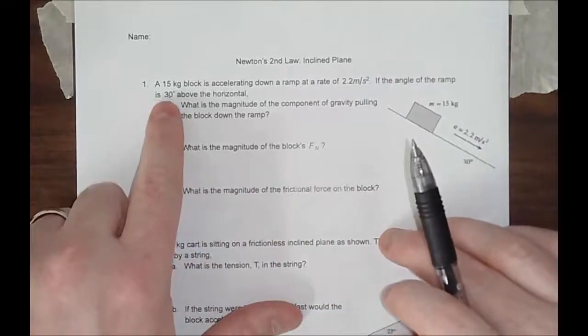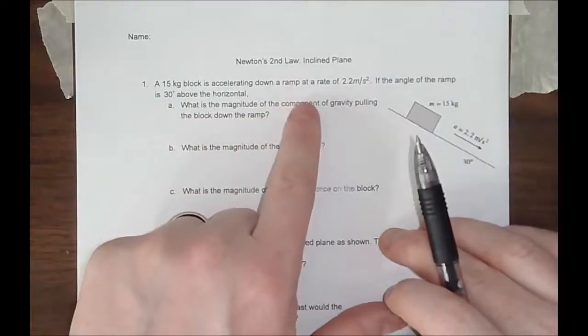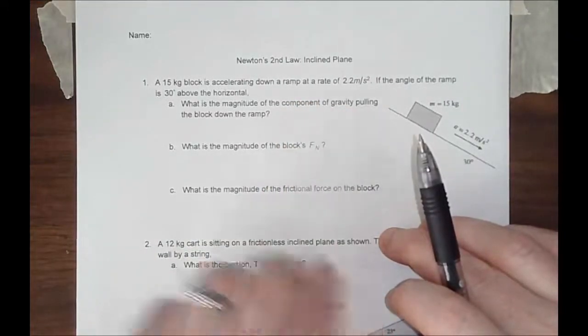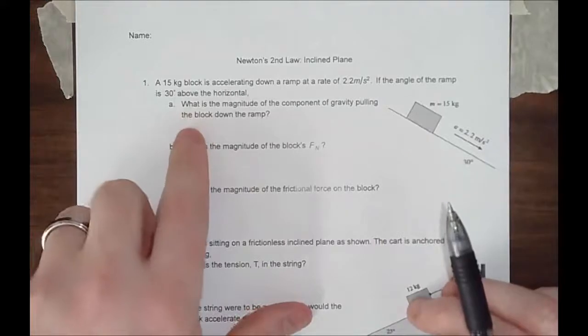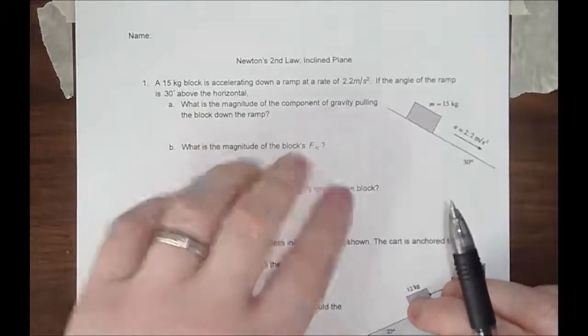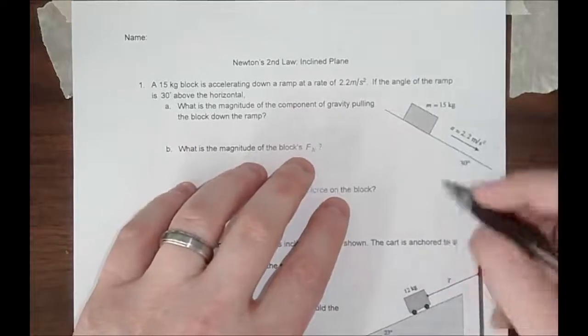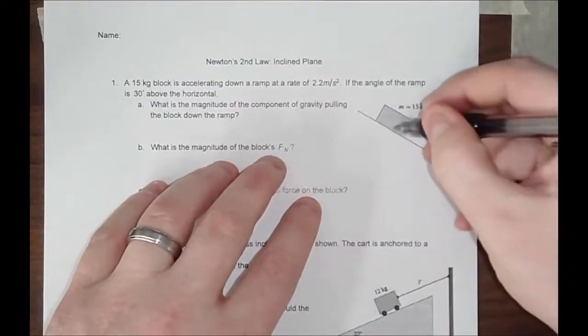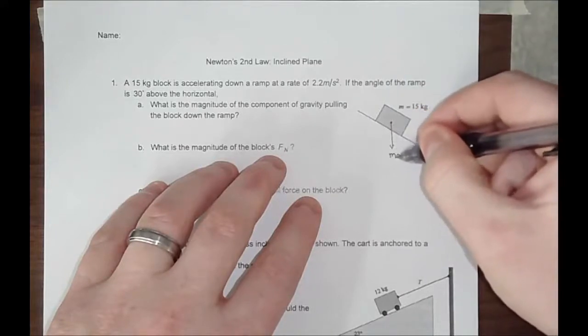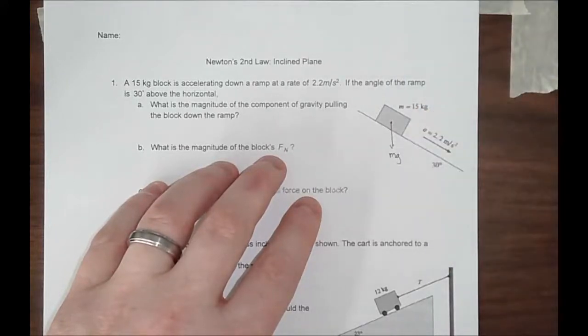Problem one: a 15 kilogram block is accelerating down a ramp at a rate of 2.2 meters per second squared. If the angle of the ramp is 30 degrees above the horizontal, what is the magnitude of the component of gravity pulling the block down the ramp? This is very important, because if you look at this block and draw your free body diagram, there's a mass times gravity that's always pulling down.